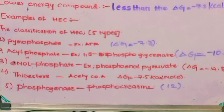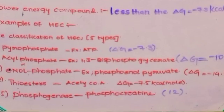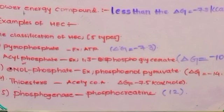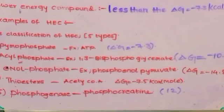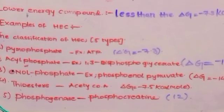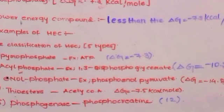Second, acyl phosphate. Example: 1,3-bisphosphoglycerate. Its energy is ΔG = -10.3 kilocalories per mole. This is greater than ATP energy.